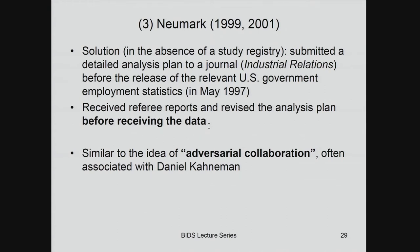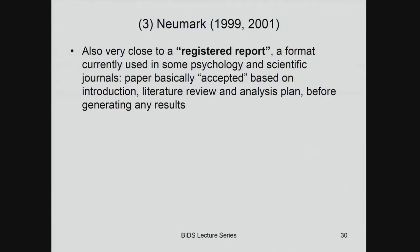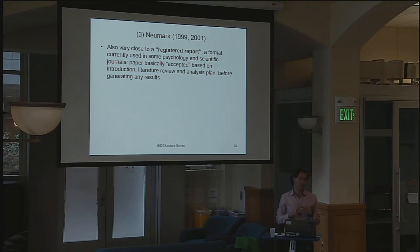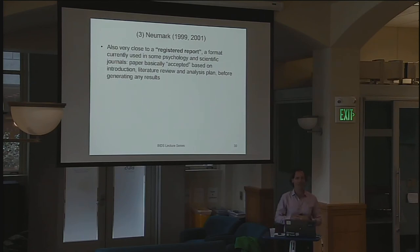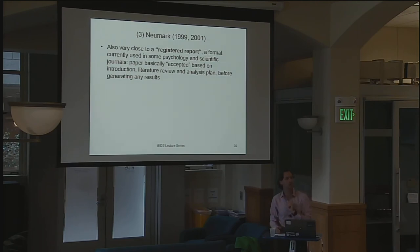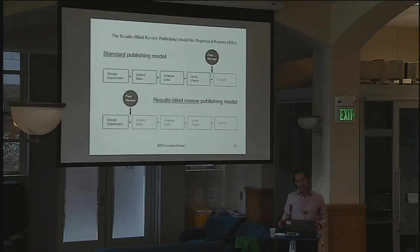This is very close to what is now called a registered report — an article format that has become common in the last few years in a number of psychology journals, some scientific journals, and one political science journal, Comparative Political Studies. Folks submit their plan, their research design, and their data — it gets peer-reviewed and receives what's called in-principle acceptance, or IPA. In-principle acceptance is like getting a revise-and-resubmit for a regular paper, in that the journal says: if you can actually get this data and do what you say you're going to do, we'll publish it. Effectively, what the Industrial Relations Journal did was a registered report: peer review, then get the data, with a commitment to publish as long as you do what you said you would.